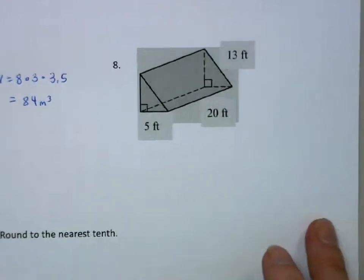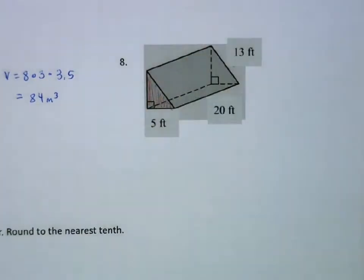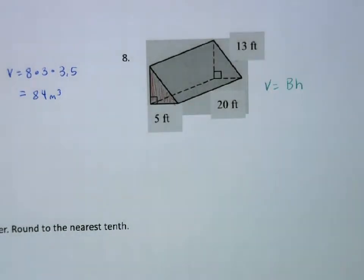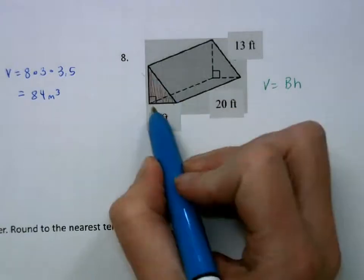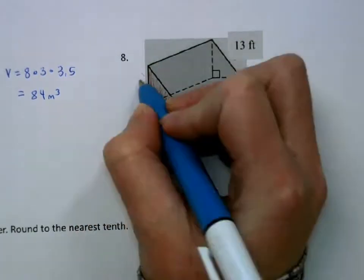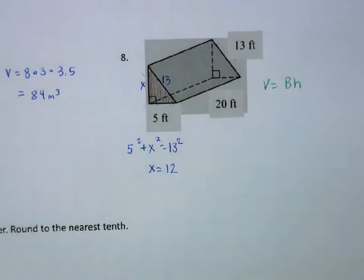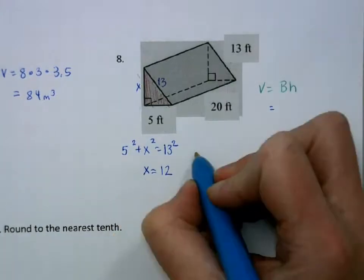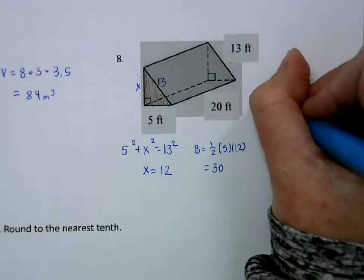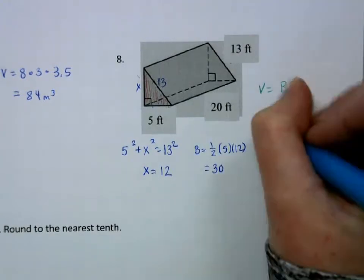This next one is a triangular prism, and the bases are the two triangles. The volume formula for a prism is BH, where B is the area of the base. The area of the base is a triangle: one half base times height. We have the base but not the height, so I'll do 5 squared plus x squared equals 13 squared. When you do this math, you get x equals 12. That gives the area of the base as one half times 5 times 12, which is 30. The height — the distance between the bases — is 20, so we get a volume of 600 feet cubed.